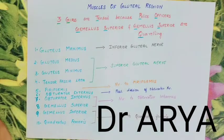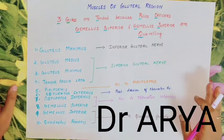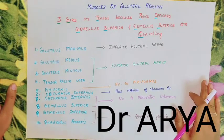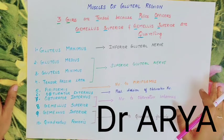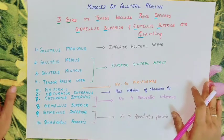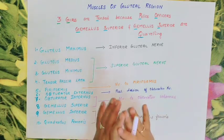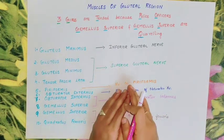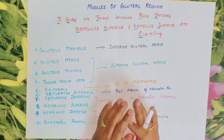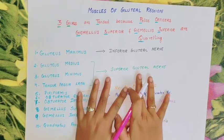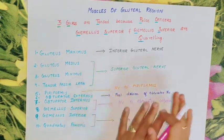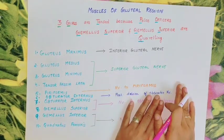Hello and welcome back to my channel. In this video, we will talk about the muscles and their nervous supply. We will talk about the gluteal region and the buttock region — the muscles and the nervous supply.